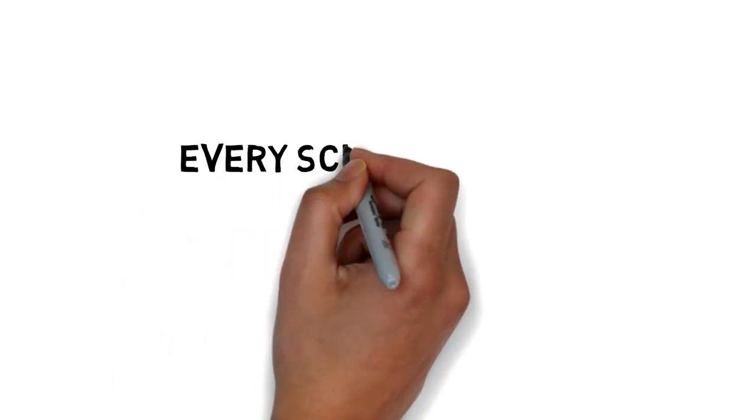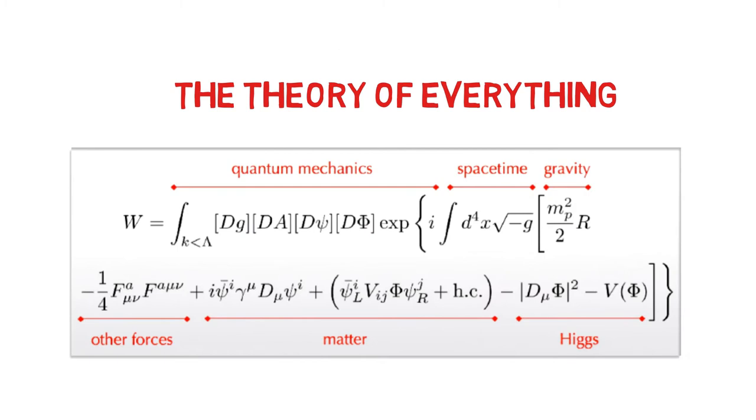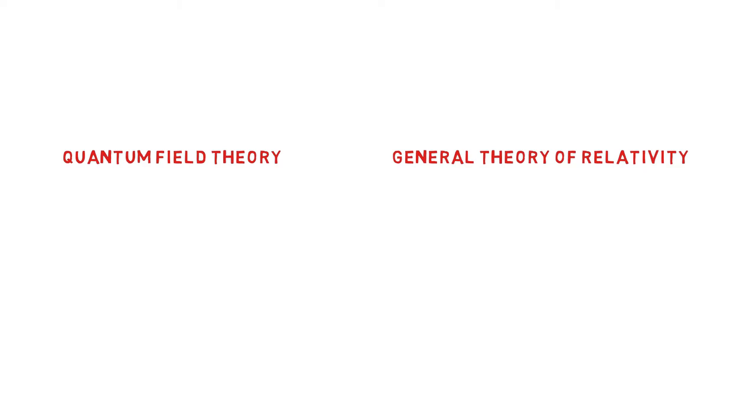Every scientific theory has its limitations. Physicists hope to one day develop a theory of everything that has no limitations and is accurate in all situations. Currently, the best physics theories are quantum field theory and Einstein's general relativity.